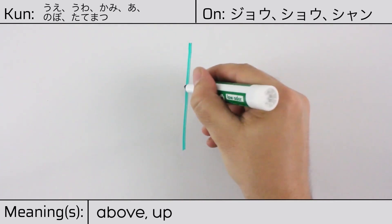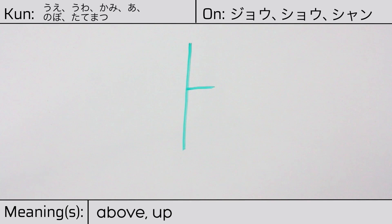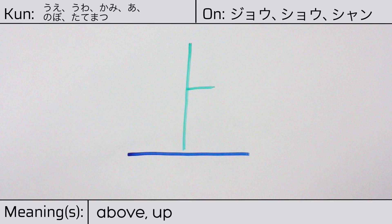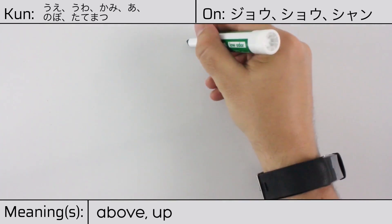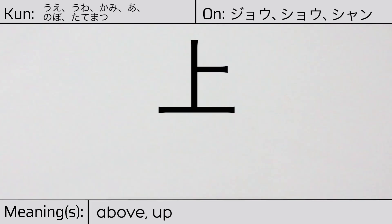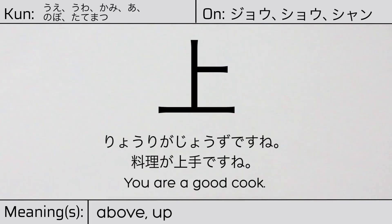The radicals are: katakana to or the oracle radical boku, followed by wan or ichi. You can remember this kanji by the following hint: the fortune teller knows everything on earth. Our example sentence is: Riori ga jousu desu ne — You are a good cook.